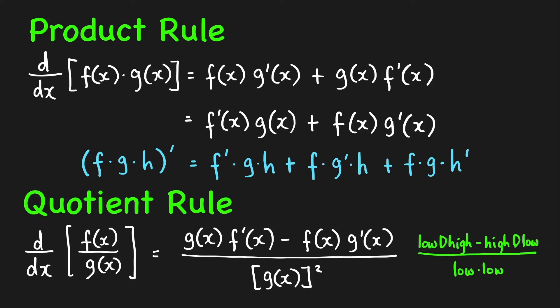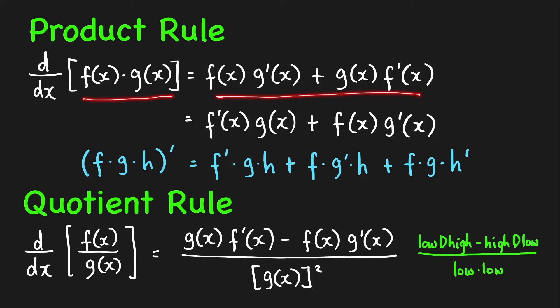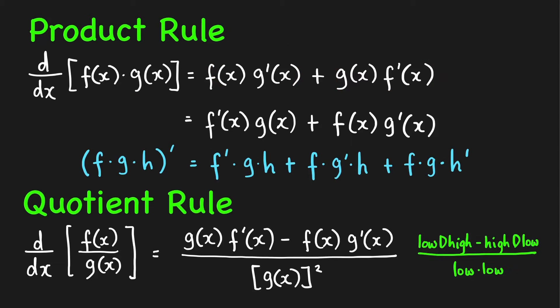First we have the product rule. It tells us that the derivative of a product is equal to a sum of two products. How do we get these products? Just take the derivative of one factor at a time.